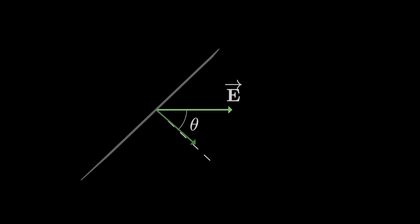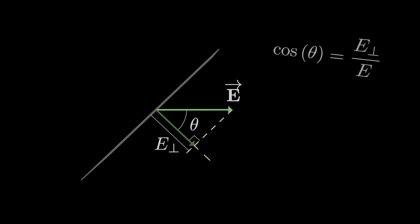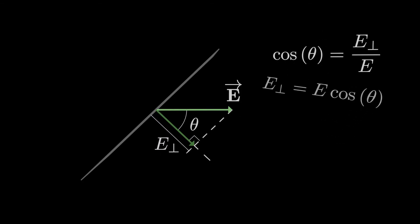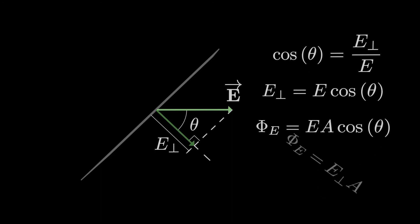The projection of the electric field vector onto the normal is also given by E times cosine of theta. Cosine of theta is like the adjacent over the hypotenuse — the magnitude of the perpendicular component of the electric field divided by the magnitude of the total electric field. We're essentially asking how much of the electric field vector is perpendicular to the area. The more the electric field is perpendicular to the area, the higher the flux through that area.